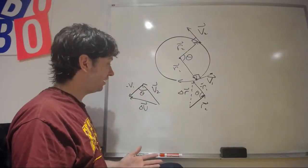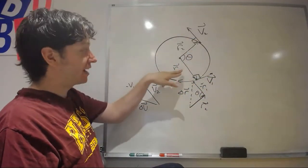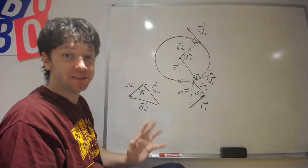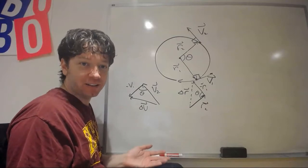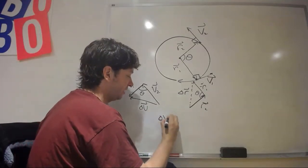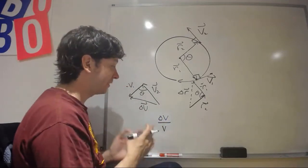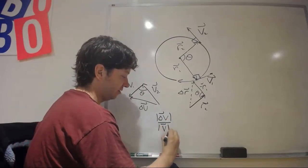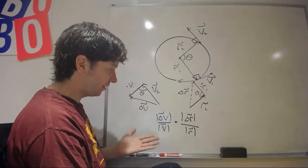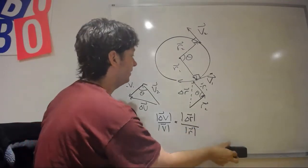These are similar triangles: you have the same angle theta between the two vectors in each triangle, and the lengths of those vectors are equal. Since it's a perfect circle, the magnitude of r₁ equals the magnitude of r₂. And as stated, the speed never changes, so the magnitude of v₁ equals the magnitude of v₂. We can therefore compare the triangles by their ratios: delta V over V equals delta R over R.